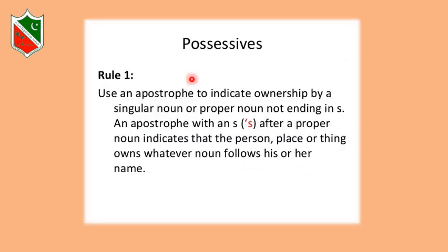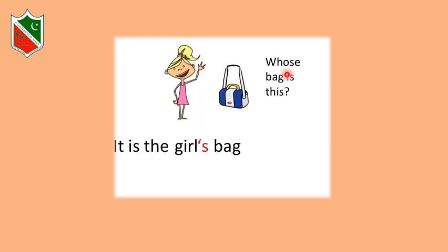The first type is possessives. Rule number one: use an apostrophe to indicate ownership by a singular noun or proper noun not ending in S. An apostrophe with an S after a proper noun indicates that the person, place, or thing owns whatever noun follows their name. For example, whose bag is this? You can see in the picture it is the girl's bag — bag is the possession of girl, so we use apostrophe with girl and add S.